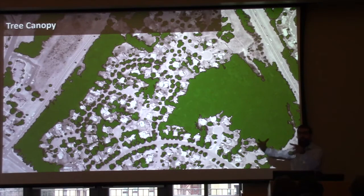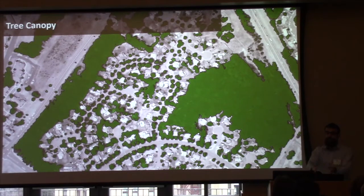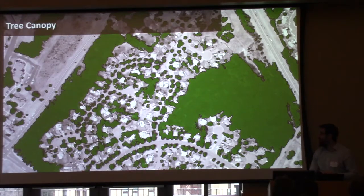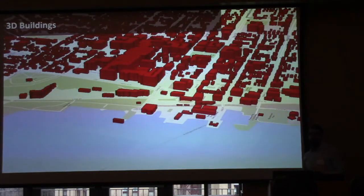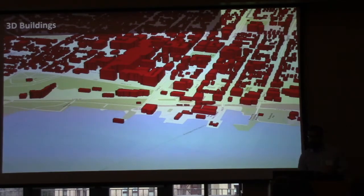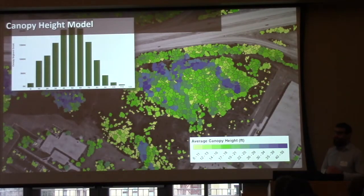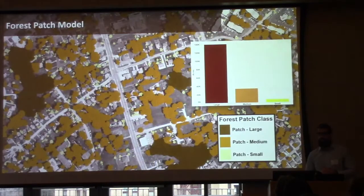Now take that and go from a 30-meter pixel — 900 square meters, which is how we've mapped things with Landsat — down to one meter, and suddenly for the same given area we have 900 times as much data. There are computing resources associated with this. But we're also doing some interesting work like 3D building extraction for the city of Burlington, tied to individual tree and height segmentation, and then also translating that data into forest patches.